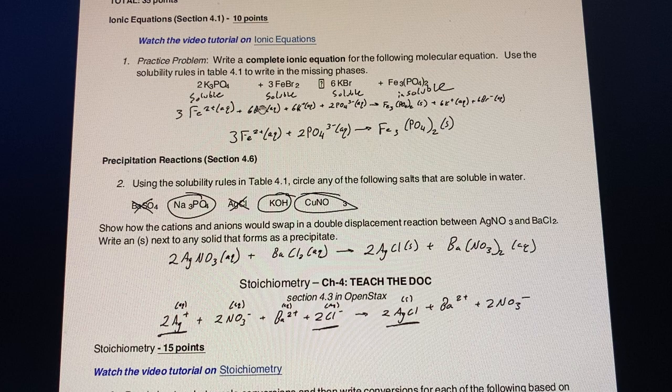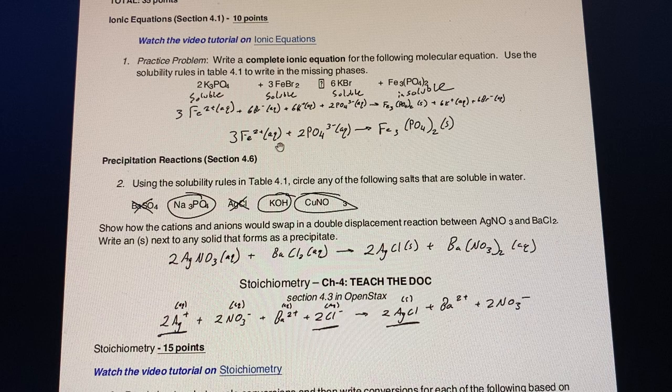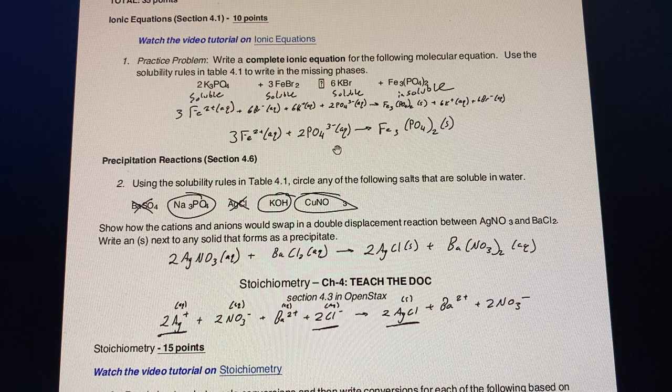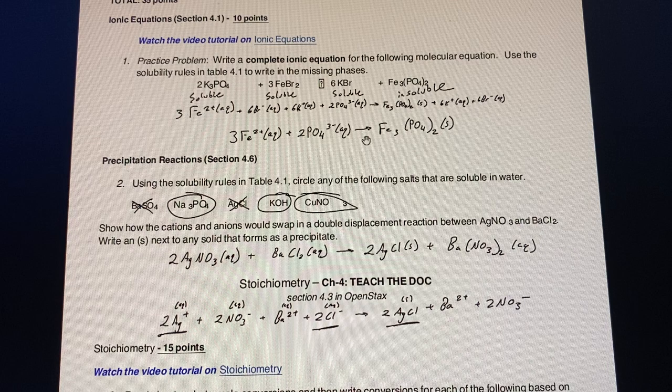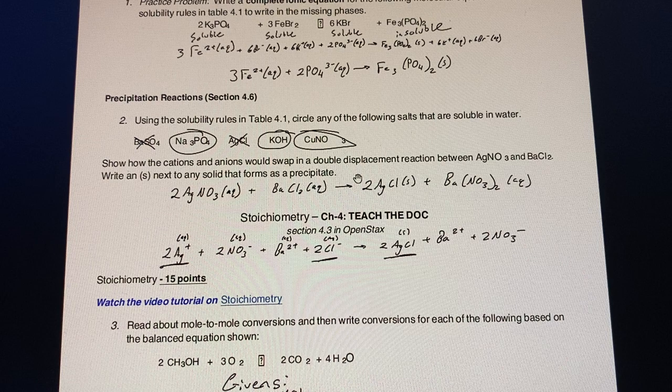And then when we take out the spectator ions we have the 3Fe2+ which is aqueous plus the 2PO4 3- which is aqueous, going to the iron phosphate Fe3(PO4)2 which is a solid.